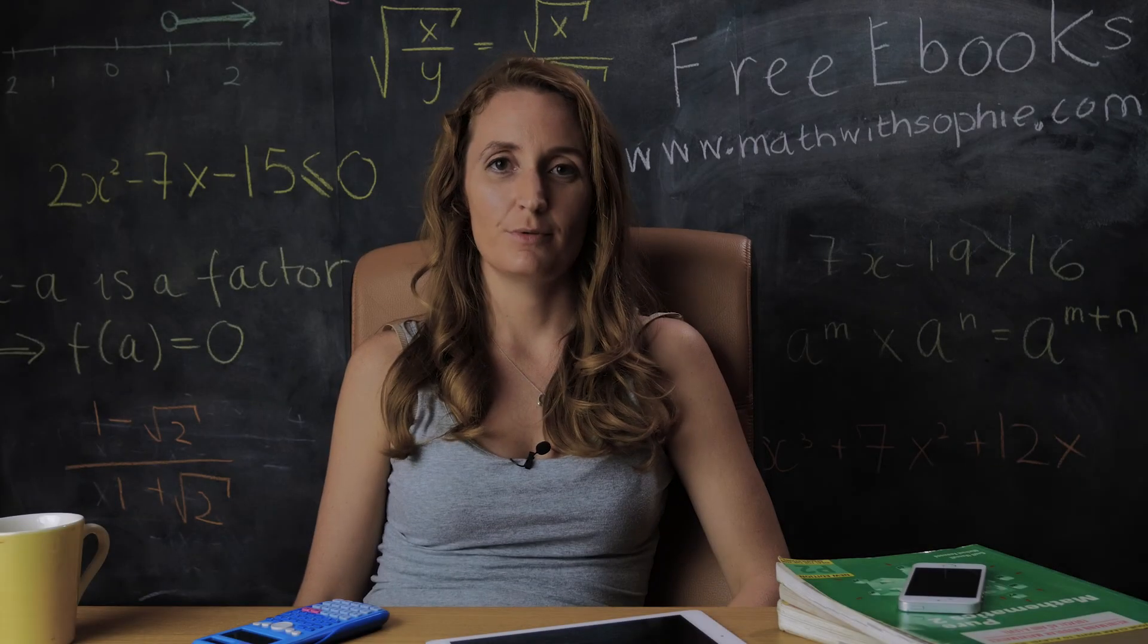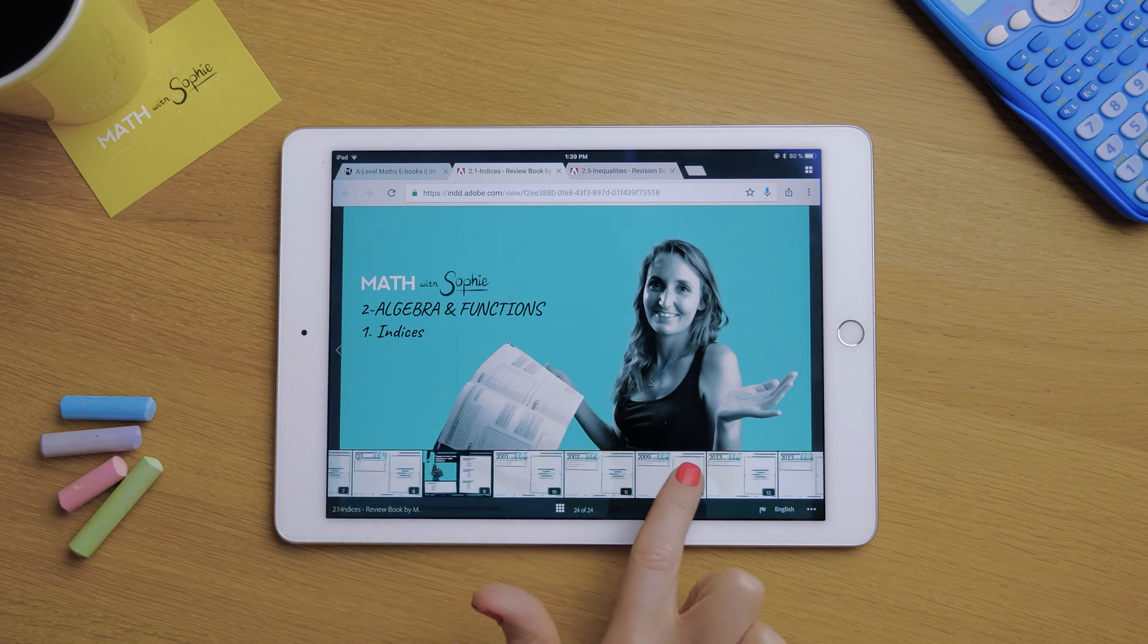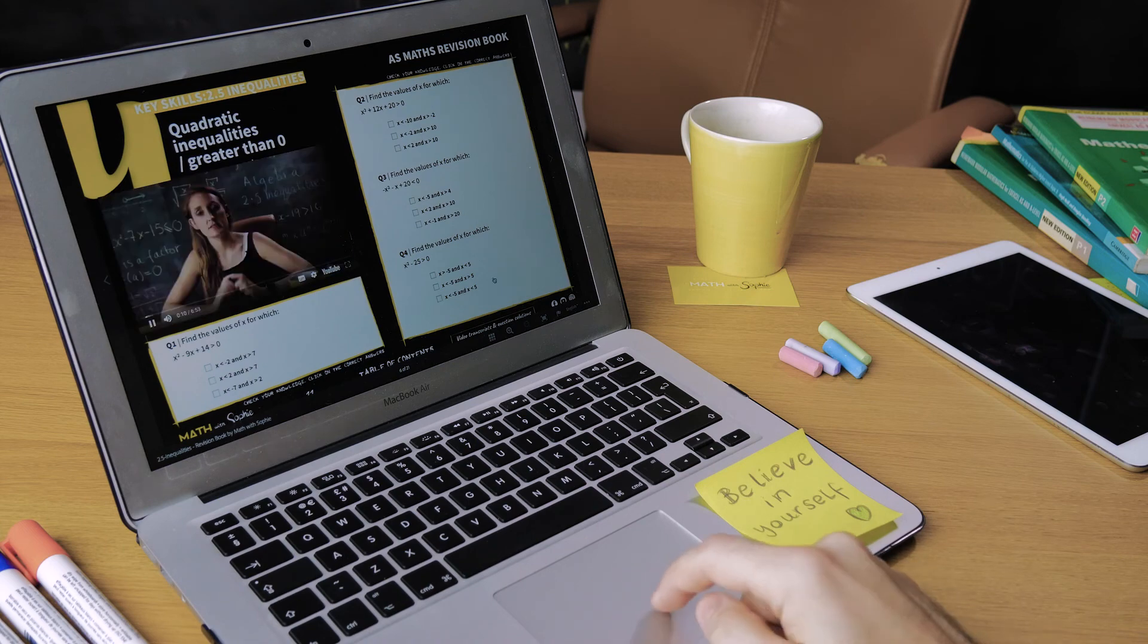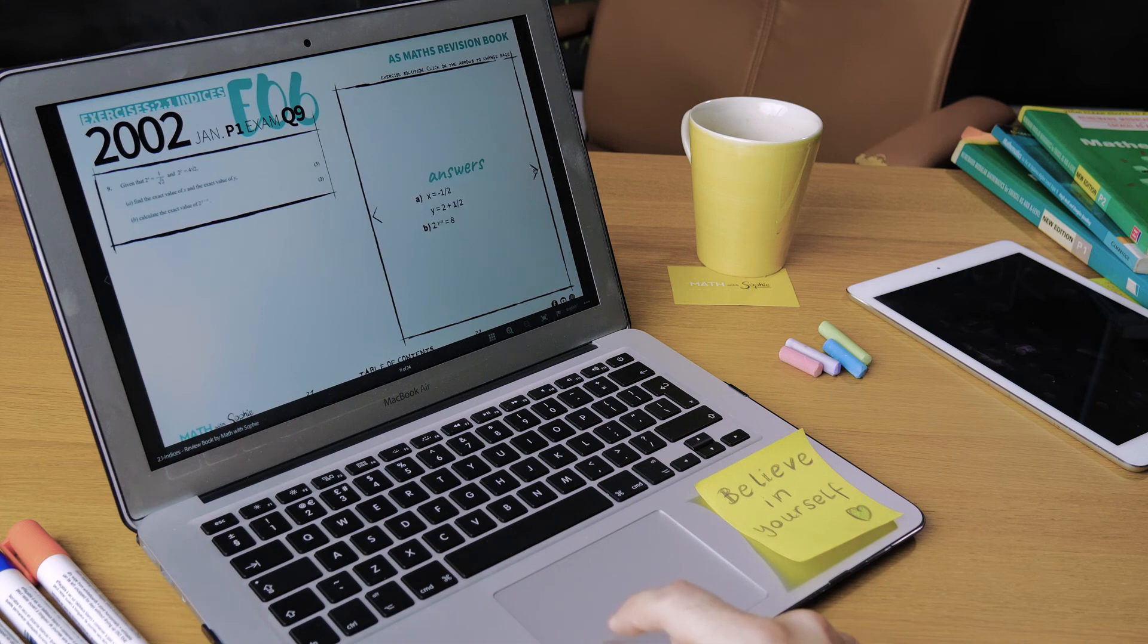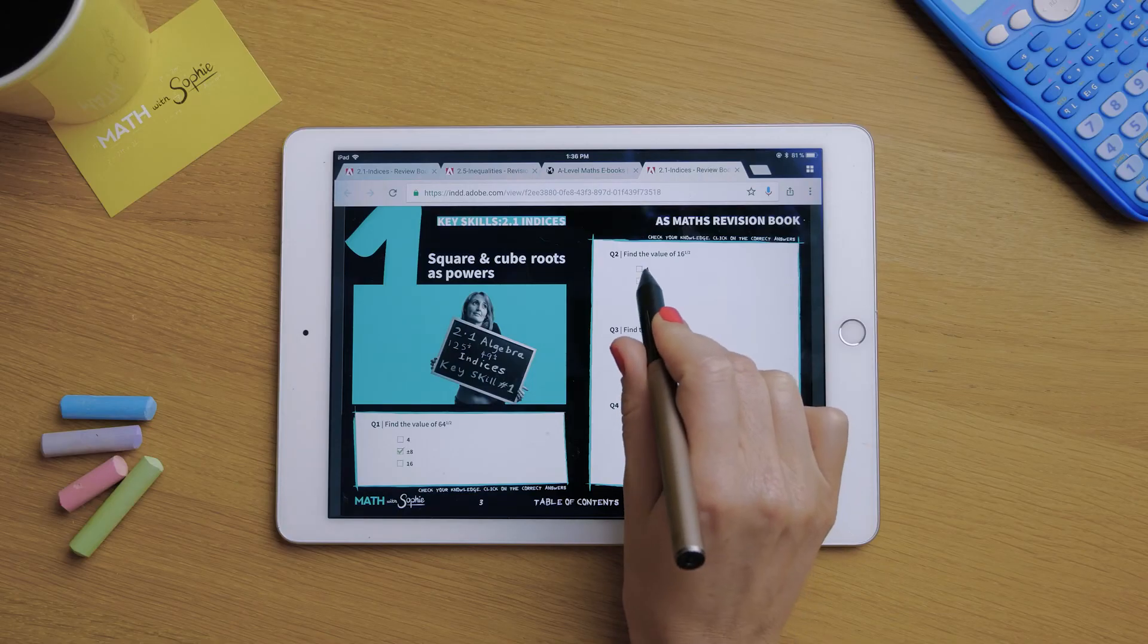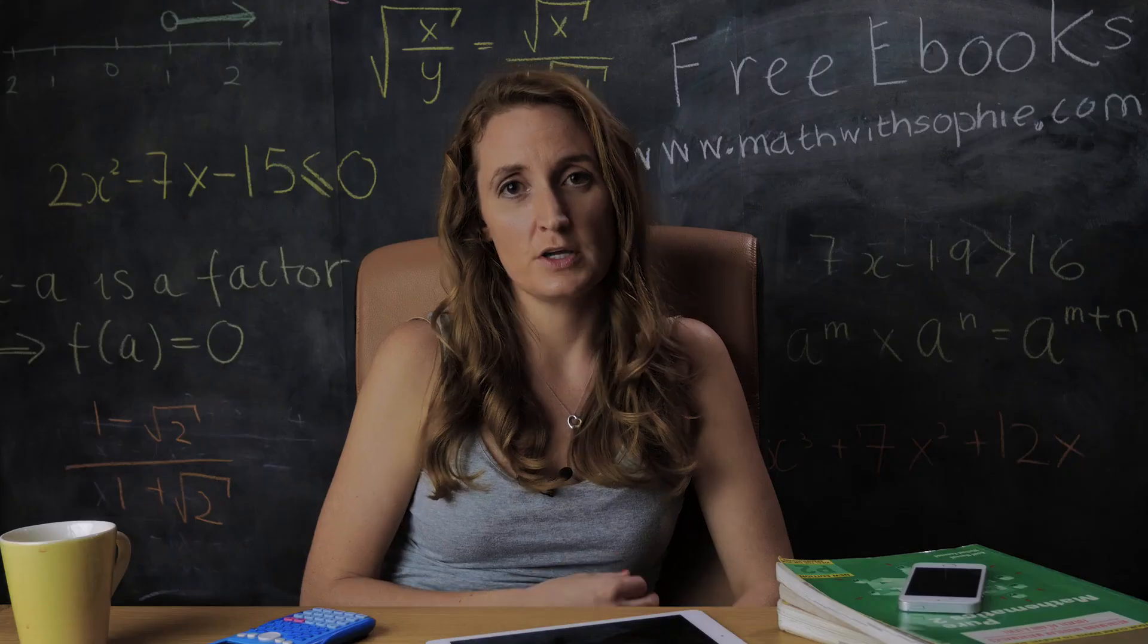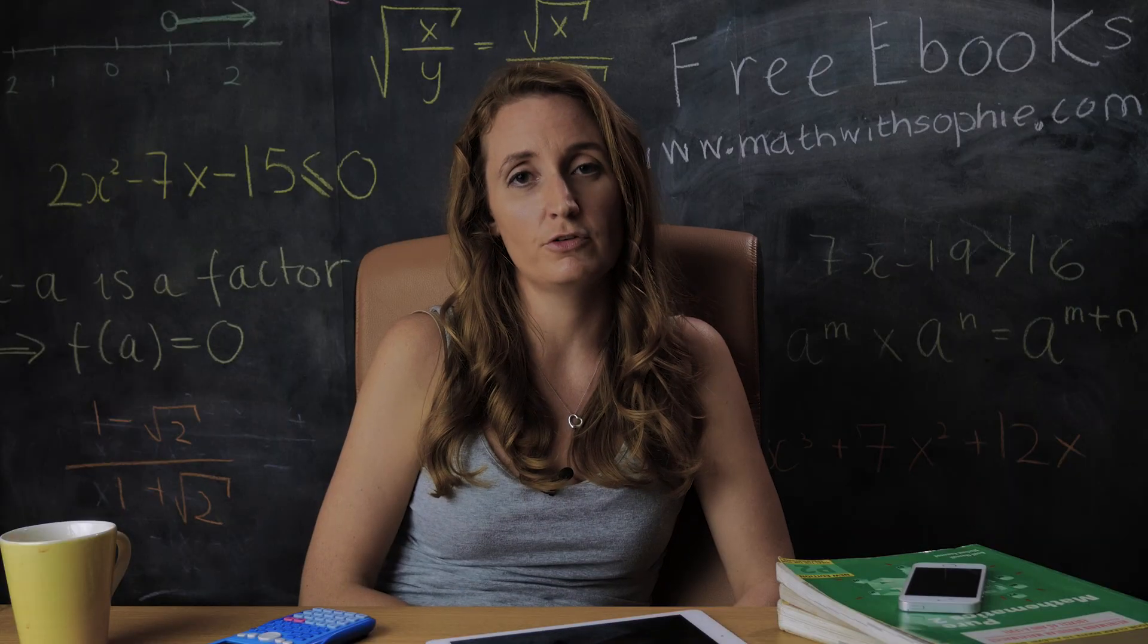The team at Maths with Sophie have made a free ebook to go with this video series. We've broken the topic down into small manageable sections. Each section has a video tutorial that you're already watching, interactive questions, and model solutions from exam questions. To claim your free ebook, you don't need to download anything, you don't need to sign up for anything. You simply click the link below and it will open in the web browser of your phone, tablet, or computer. If you enjoy using our free ebooks, make sure you check out our website because we have other ebooks on different topics.